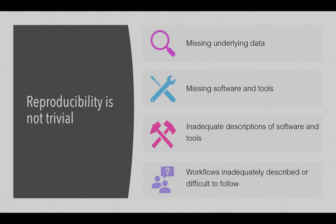Another common issue was missing software and tools — for example, an in-house program that was referenced but whose code was not available, making it impossible to reproduce. Other pieces of software and tools simply weren't made available. Even when tools were available, there were often inadequate descriptions in the paper itself — things like mentioning that they used a particular script but not giving information about the parameters it was run with or other critical details needed to actually run the analysis.